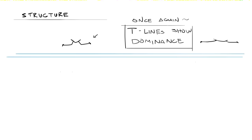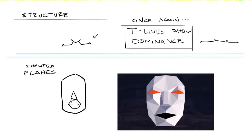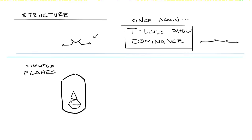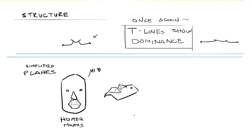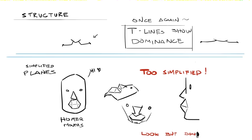Speaking of form, it's worth going over some super simplified planes of the mouth area. Perhaps the easiest reference to keep in mind is that of Homer Simpson — always remember that the mouth sticks outward like some awkward six-sided tent. This will help you dictate how the mouth should look when drawing from both subtle and extreme angles.